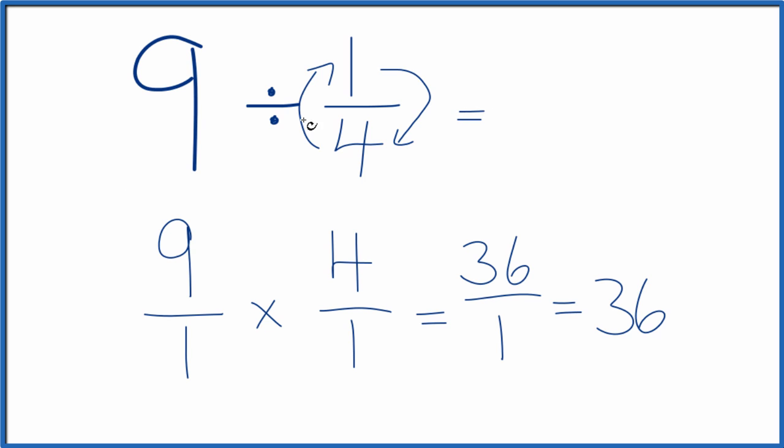So in answer to our question here, 9 divided by 1 fourth, that gives us 36. If you multiply 36 by 1 fourth, you get 9.